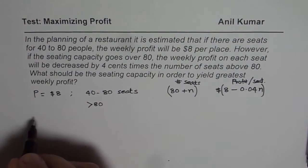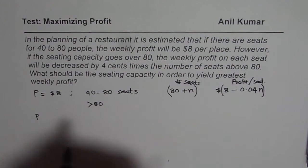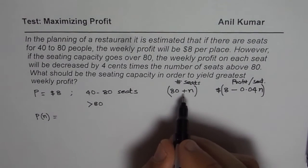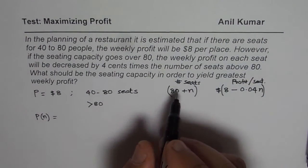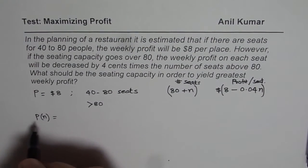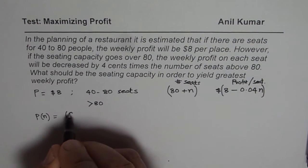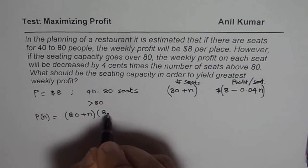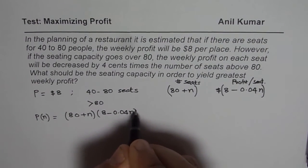So we can write down our expressions. We say profit per seat, let's say N is the number of seats, will be. So N is increased number of seats, remember that. So profit will be 80 plus N times 8 minus 0.04 N.